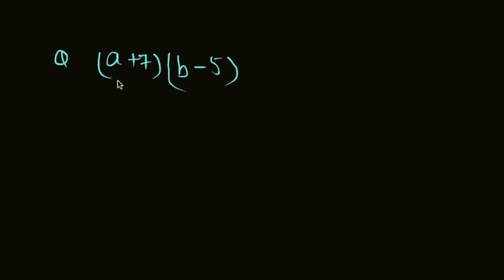First of all, we are going to learn how to do this. a plus 7, then second bracket b minus 5. And here we are going to write b minus 5, and here we are going to multiply this a by b, and then a by minus 5.